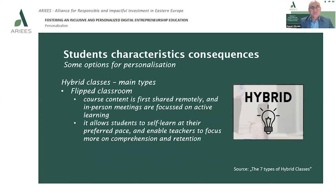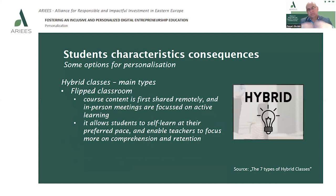Finally, the last type of hybrid class is the flipped classroom. Course content is first shared remotely, and in-person meetings are focused mainly on active learning. It allows students to self-learn at their preferred pace and enables teachers to focus more on comprehension and retention, rather than just the initial explanation of the main material.